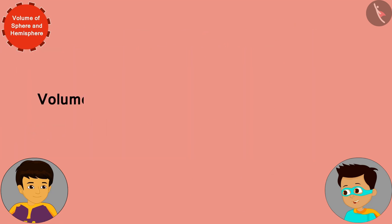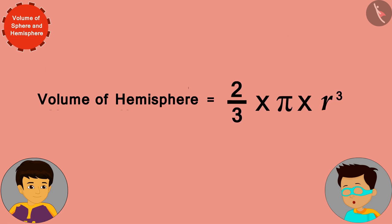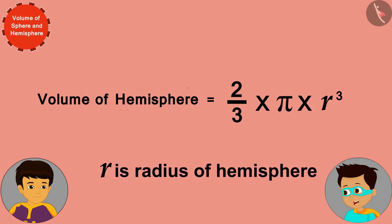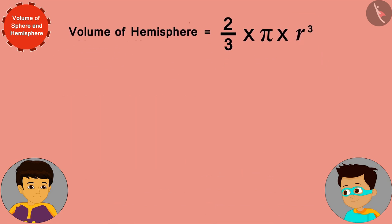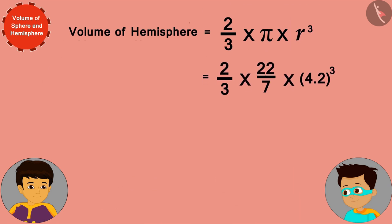The formula for the volume of a hemisphere is equal to (2/3) × π × r³, where r is the radius of the hemisphere. Now I can solve this by replacing r with the inner radius of the bowl, 4.2 centimeters.